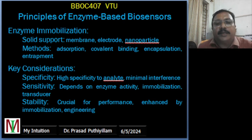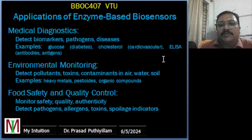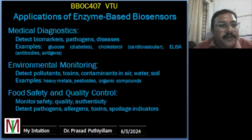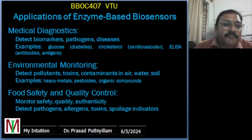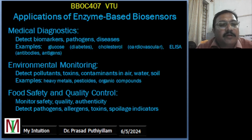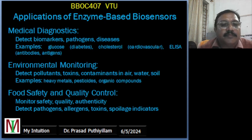Applications of enzyme-based biosensors — medical diagnostics: enzyme-based biosensors are widely used in medical diagnosis for the rapid and sensitive detection of biomarkers, pathogens, and diseases. For example, the glucose biosensor, which is commonly used for diabetic management; the cholesterol biosensor for cardiovascular risk assessment; and enzyme-linked immunosorbent assay, ELISA, used for detecting antibodies and antigens.